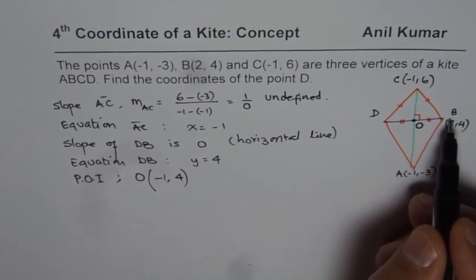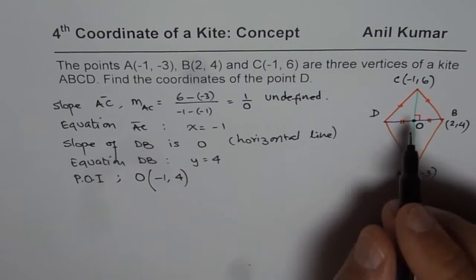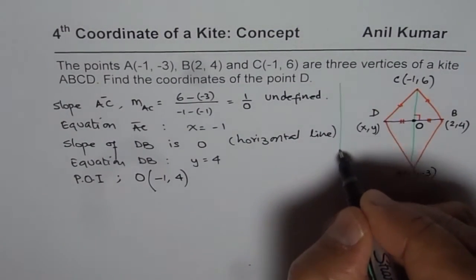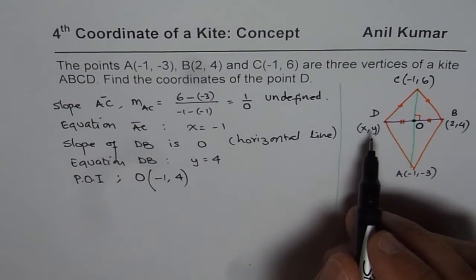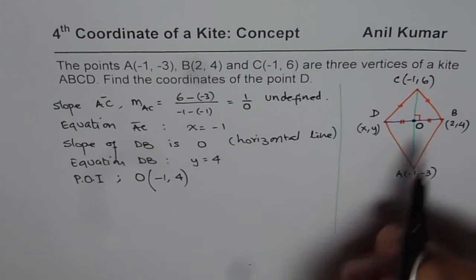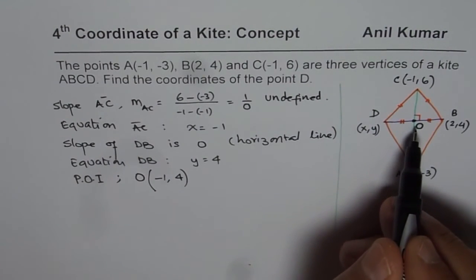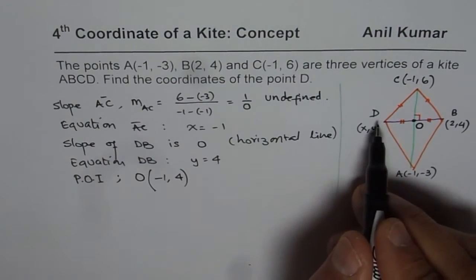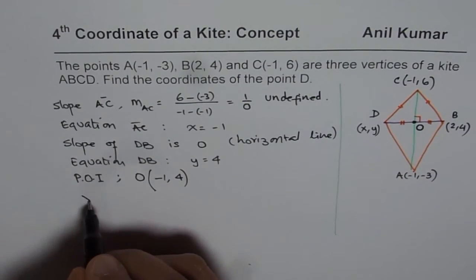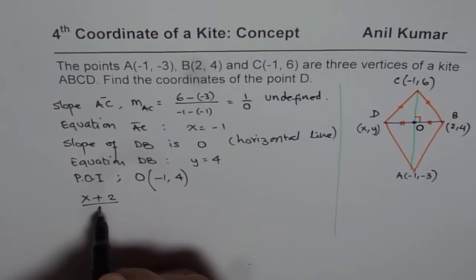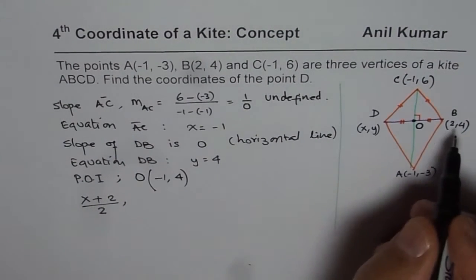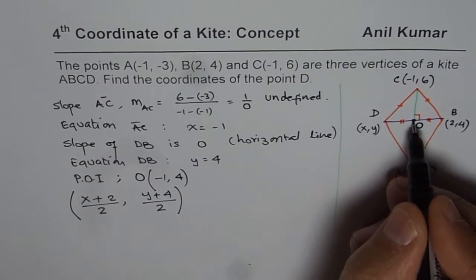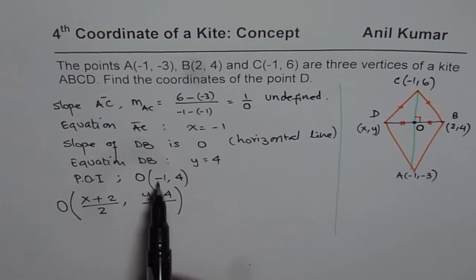Now we know point O, B, and we need to find point D. Let point D be (x, y). In that case, how can we find point D knowing O and B? Well, since O is the midpoint with value (-1, 4), it is the average of the x and y values of D and B. But we know O is (-1, 4).